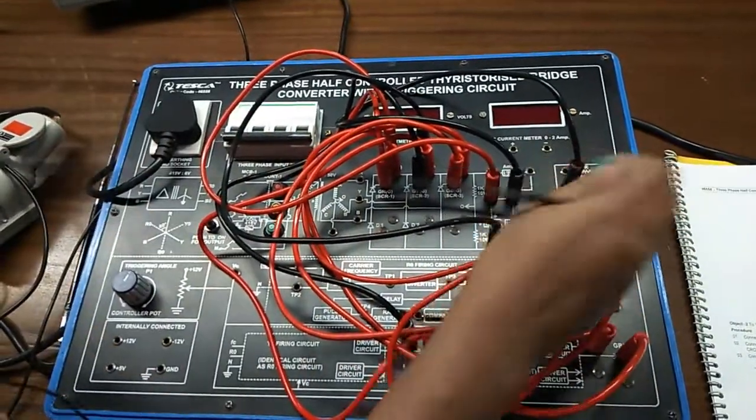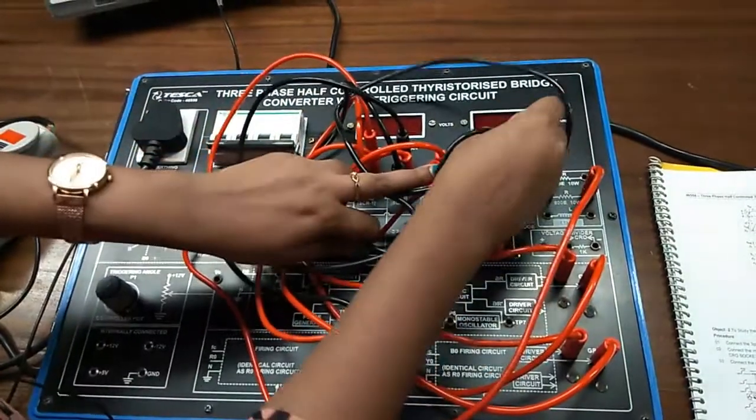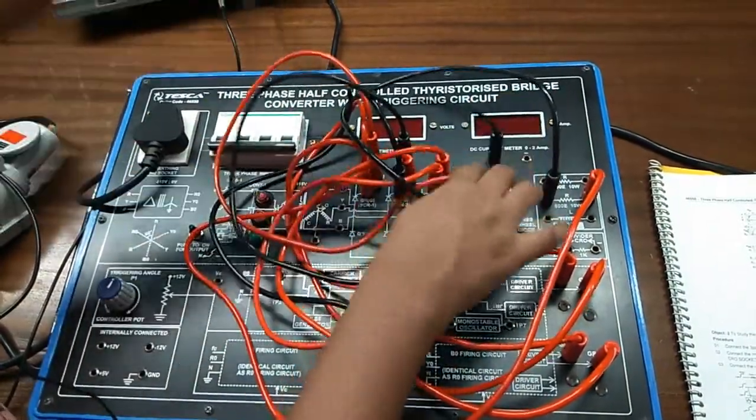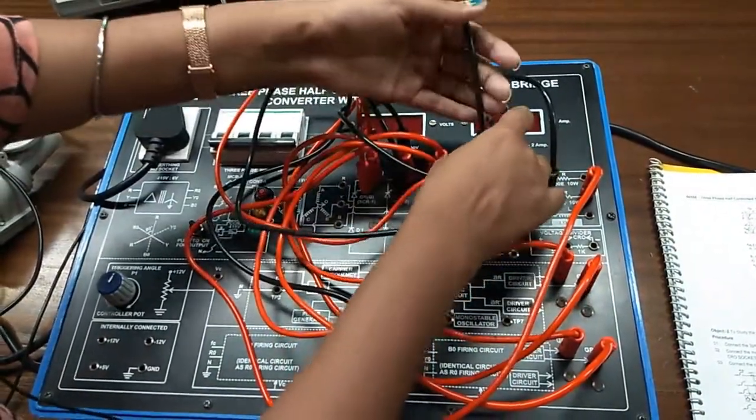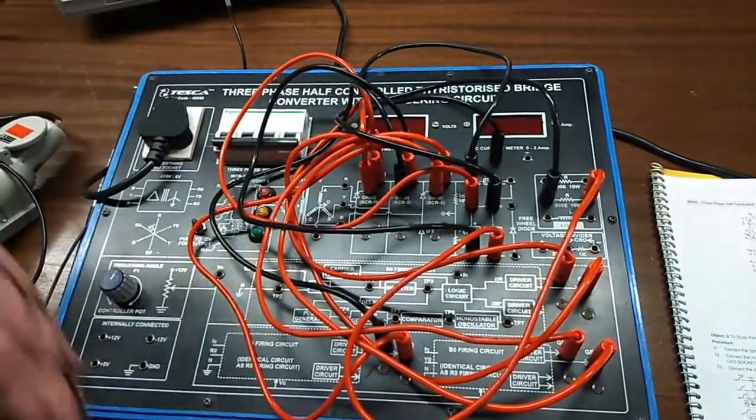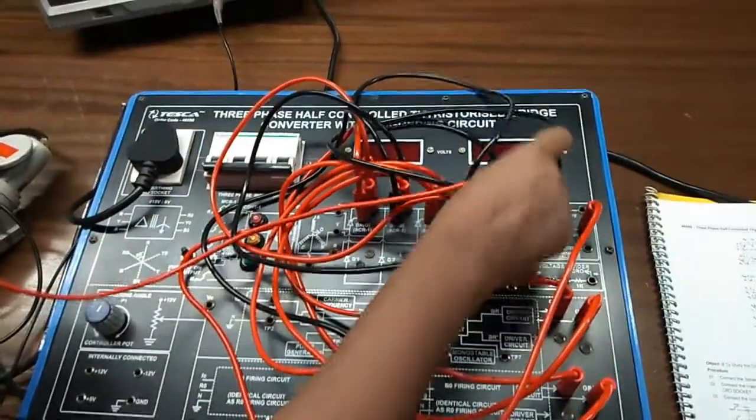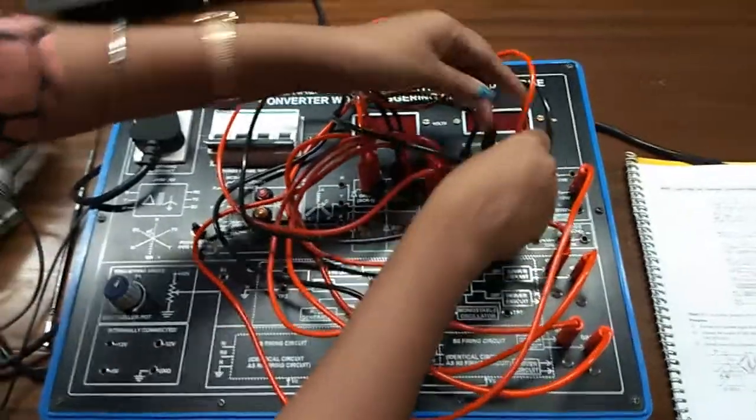Now, connect the ammeter current meter here, positive terminal with positive terminal and negative terminal with negative terminal.